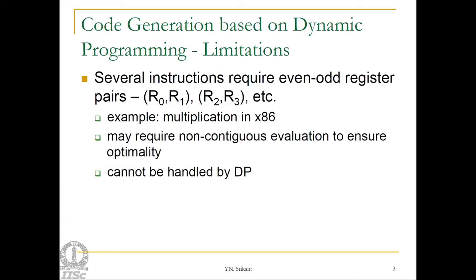The major problem is many instructions such as the multiply instruction and many floating point instructions in modern day processors require even-odd register pairs for their operation. For example, R0-R1, R2-R3, etc. They cannot work with pairs such as R1-R2, R3-R4. In such cases they may require non-contiguous evaluation orders to become optimal code generators. This cannot be handled by dynamic programming as we have already studied it. It requires ad hoc changes and this is one of the major limitations of the approach.